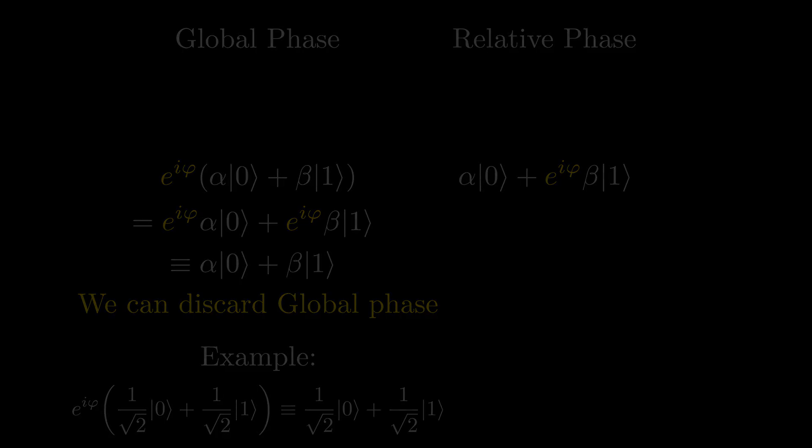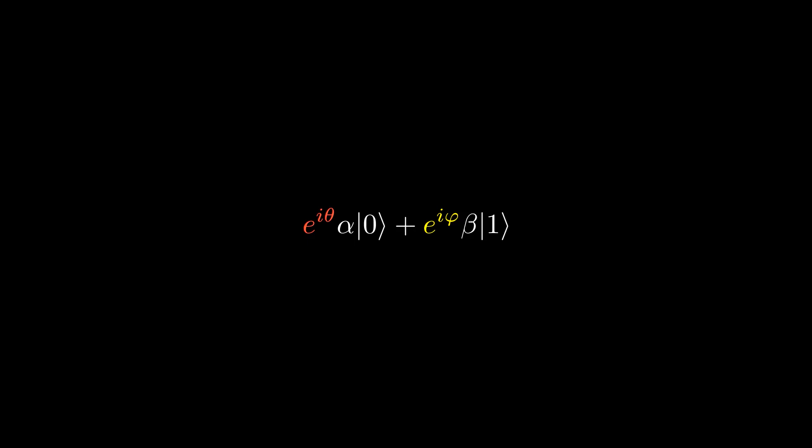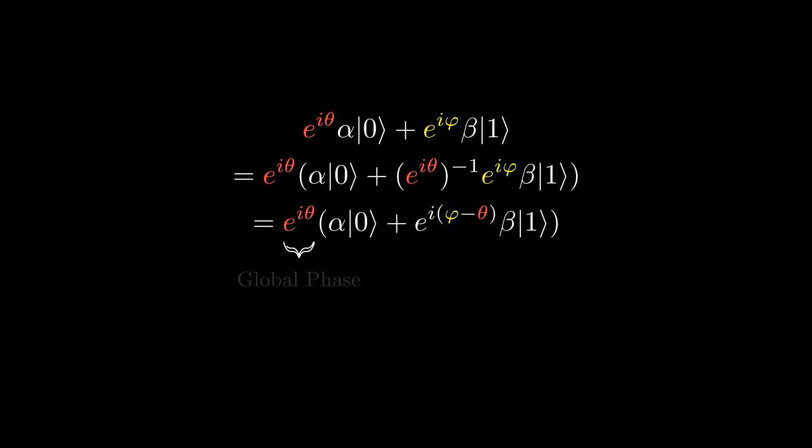But what if we have a complex number in both the amplitudes of the |0⟩ state and the |1⟩ state? What we'd do is we factor out the complex number of the |0⟩ state from the entire qubit, creating a global phase and relative phase. Then we can discard the global phase, leaving us with a qubit with a relative phase.